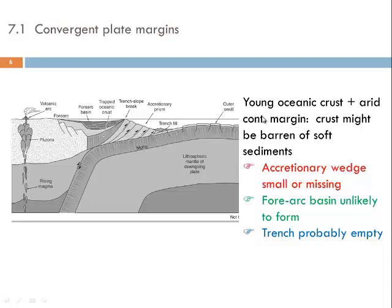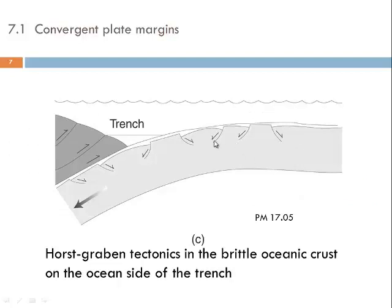In a situation with very young oceanic crust, there will not be a significant amount of oceanic sediments, so no accretionary prism or wedge will form, or it will be a very small one, and therefore no forearc basin can develop. In such a situation we might also find an empty trench, specifically if we have an arid climate on the continent that does not transport much material into the forearc region. Here again we see horst and graben tectonics contributing to the segmentation of the upper oceanic crust undergoing subduction.